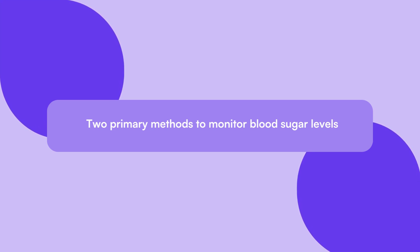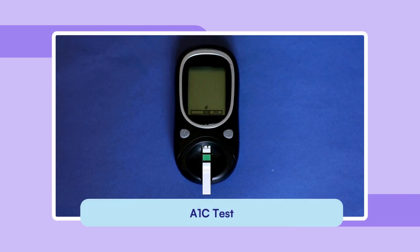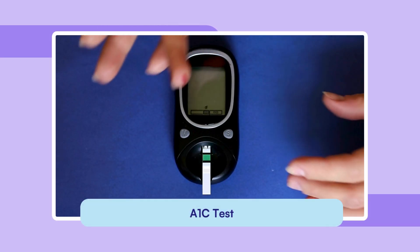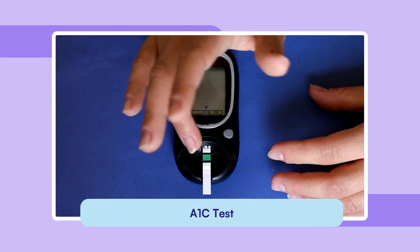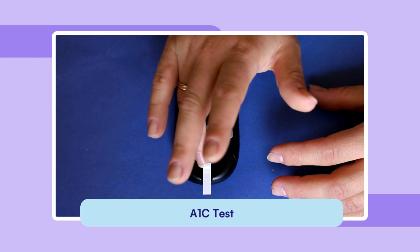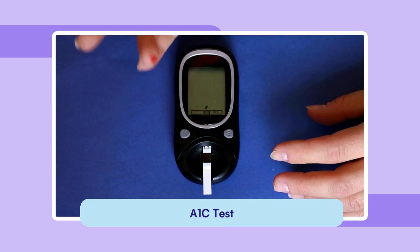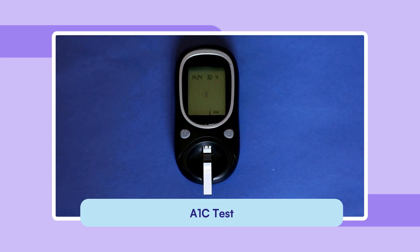There are two primary methods to monitor blood sugar levels. Firstly, the A1c test. This test provides an average of a person's blood sugar over two to three months. It measures the percentage of hemoglobin in the blood that has glucose attached, known as glycated hemoglobin.